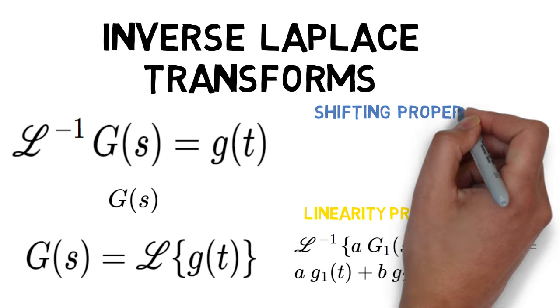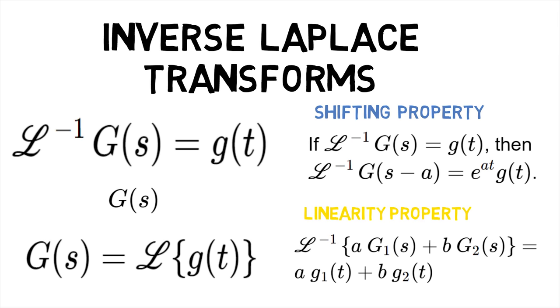The second property is the shifting property, which states that if L^(-1)[G(s)] = g(t), then L^(-1)[G(s-a)] = e^(at)g(t).